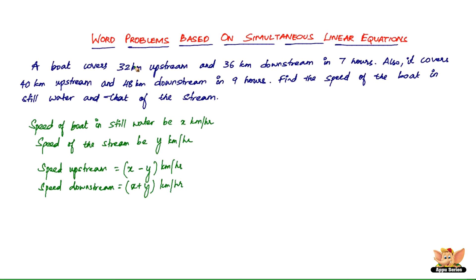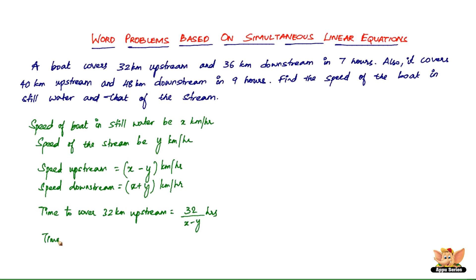The boat covers 32 kilometers upstream. When you have the speed and the distance, you can find the time. Time equals distance divided by speed. So the time to cover 32 kilometers upstream is 32 divided by (x minus y) hours. Similarly, the time to cover 36 kilometers downstream is 36 divided by (x plus y) hours, because the speed is greater going downstream.